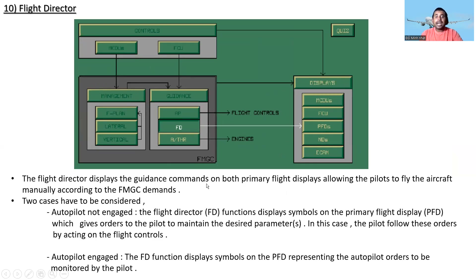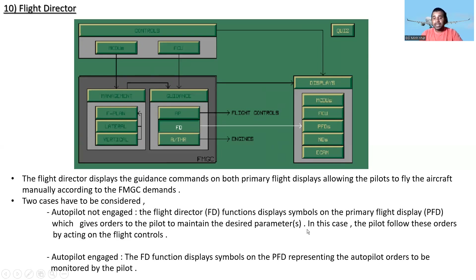The flight director displays the guidance commands on both Primary Flight Displays, allowing the pilot to fly the aircraft manually according to the FMGC demands. Two cases must be considered: when the autopilot is not engaged, the flight director displays symbols on the PFD giving orders to the pilot to maintain the desired parameters, and the pilot follows these orders by acting on the flight controls. When the autopilot is engaged, the flight director displays symbols on the PFD representing the autopilot orders to be monitored by the pilot.